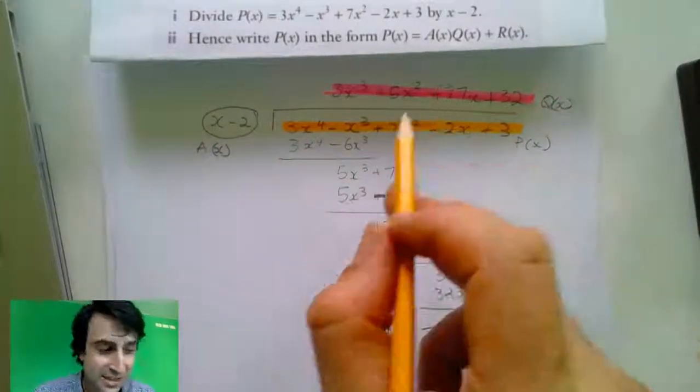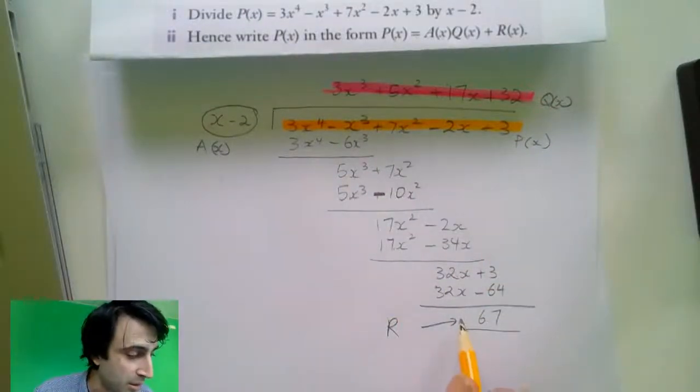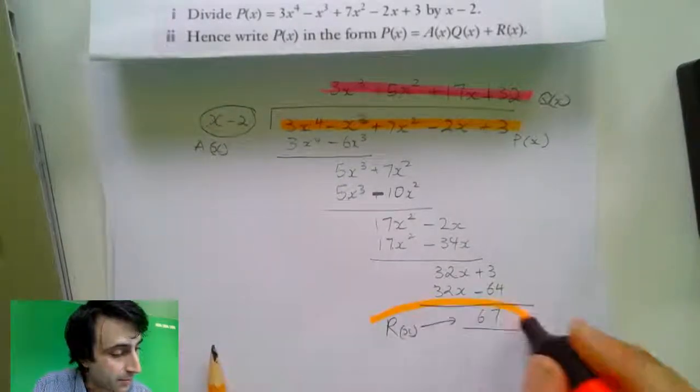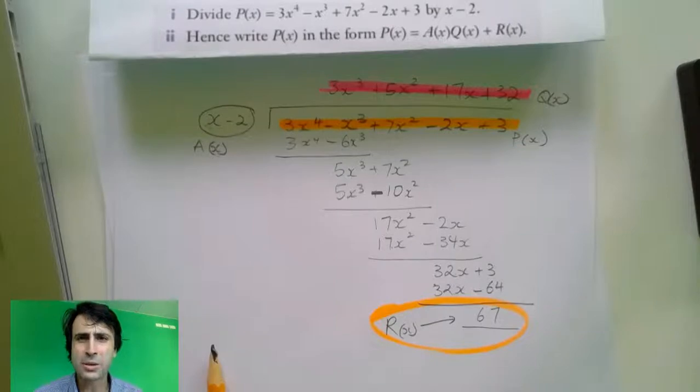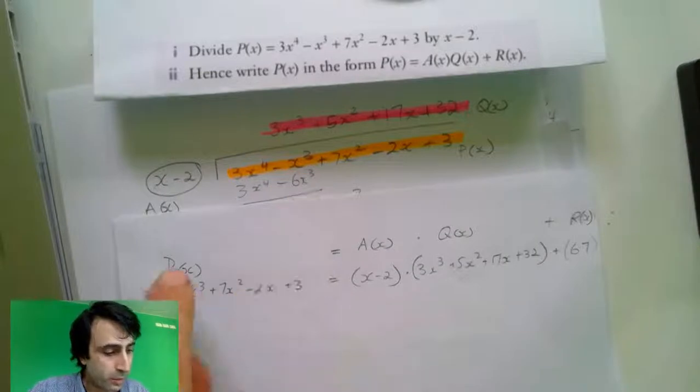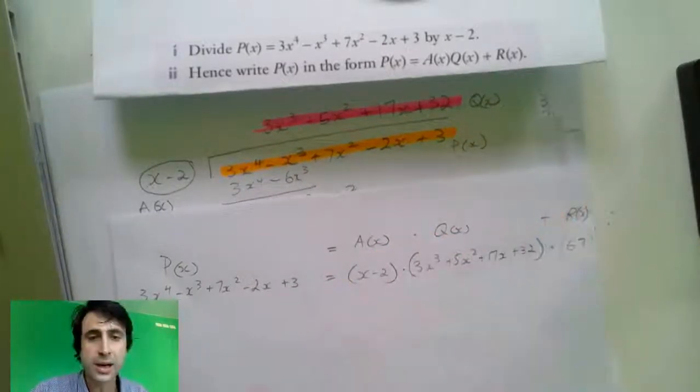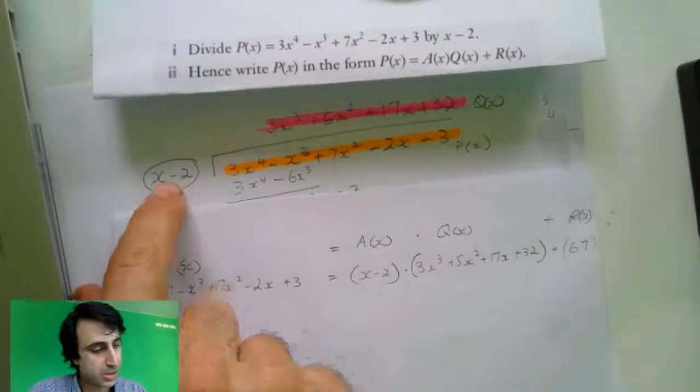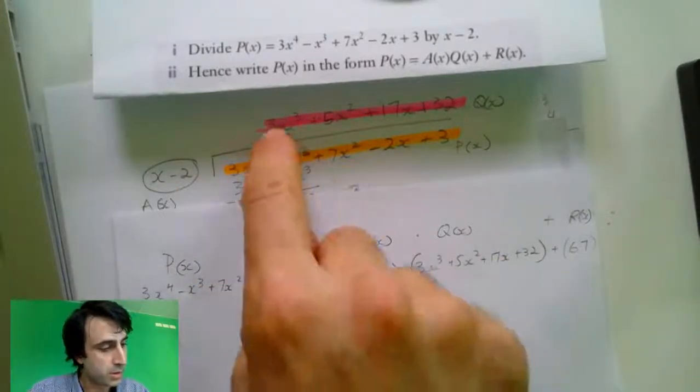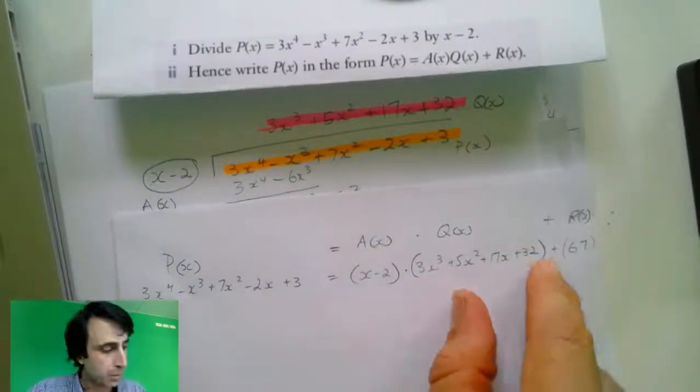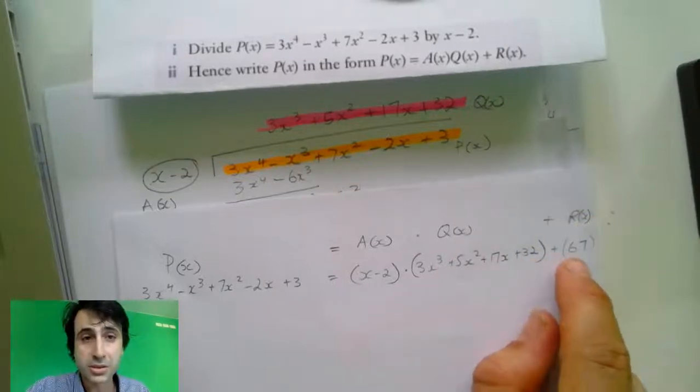But that times that doesn't equal that unless we also take into account our lovely little remainder down here. So, how are we going to write this? It's going to take ages, so let me pause for a second. So, here we have P, or function P, which is our parent function, which I've written down here, equals function A times by function Q plus function R. Function A, we establish down here, is x minus 2 times the quotient function, which is 3x cubed plus 5x squared plus 17x plus 32 plus function R, which is 67.